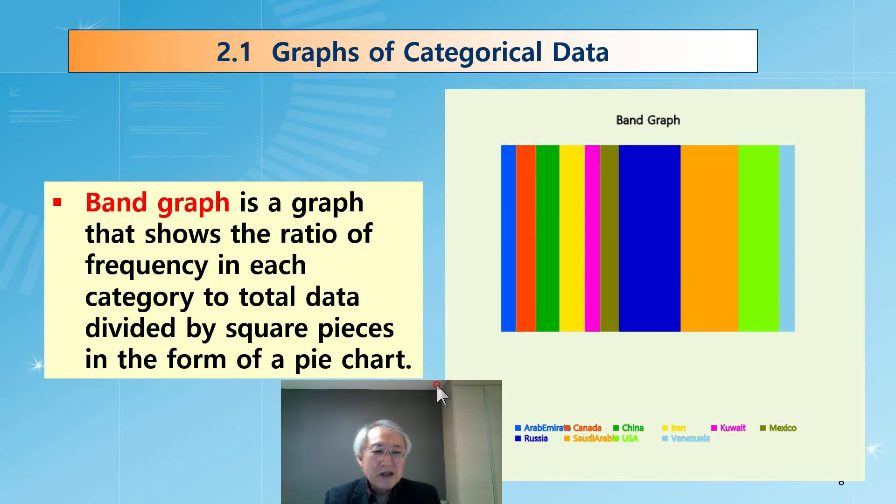Another type is similar to the pie chart. Band graph. Does it look like a band? It is a rectangle. They divide all rectangles into pieces depending on each category frequency. We call this a band graph. It looks like a beautiful band, a colorful band. It is similar. But in case of E-STAT, you may arrange by the frequency, the largest frequency at the left, or the next one, and so on.